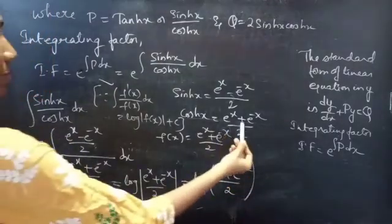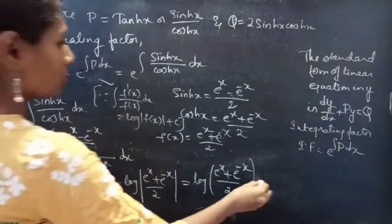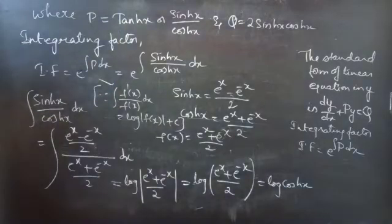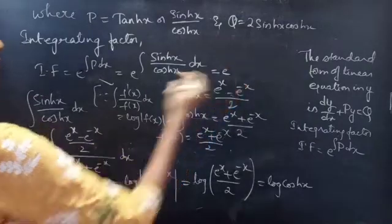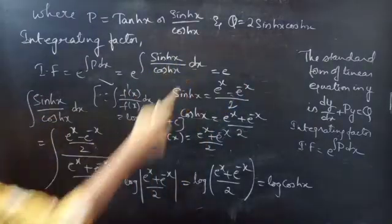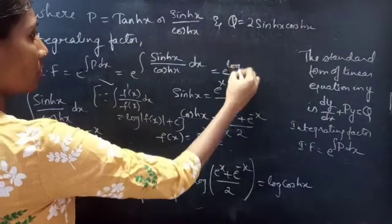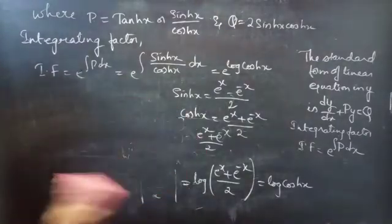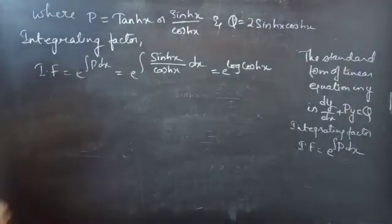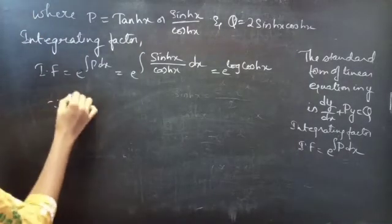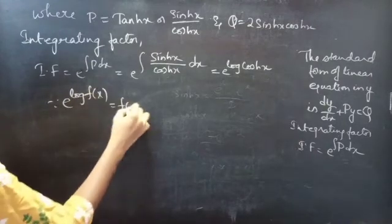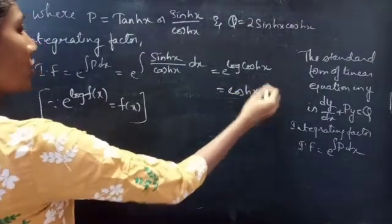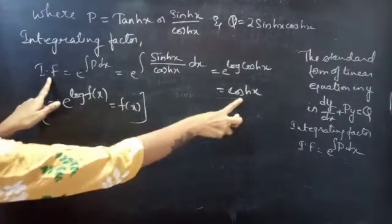We know that e power x plus e power minus x by 2 is cosh x, so this equals log cos Hx. Coming to the integrating factor, this equals e to the power of integral sin Hx by cos Hx into dx, which is log cos Hx. Since e to the power log of some function of x equals that function of x, this becomes cos Hx. So our integrating factor is cos Hx.